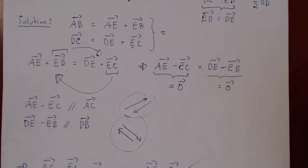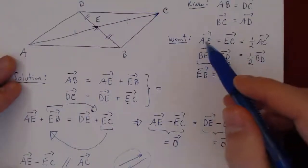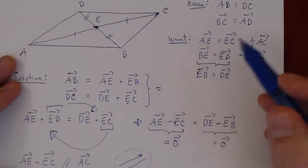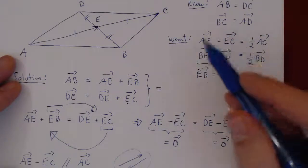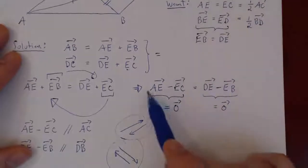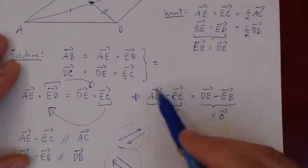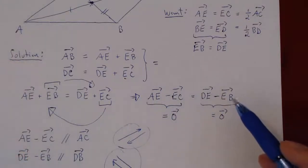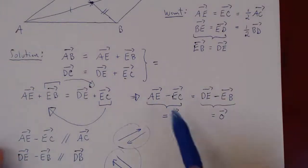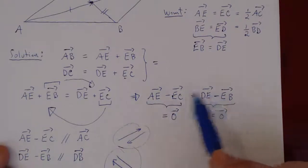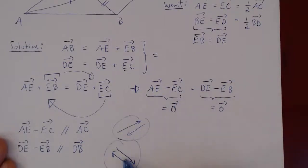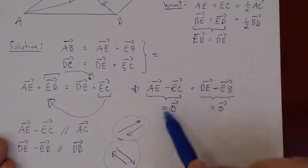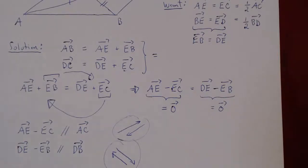The only tricky part was that the vector AE minus EC lies on diagonal AC, and DE minus EB lies on diagonal DB, so both had to have different directions and could not be equal — unless both were the zero vector. This was a subtle argument, but you'll encounter problems like this on the problem sheet. You cannot prove AE equals EC independently of BE equaling ED; you must prove both equalities simultaneously within the same equation. When you reach a point where two vectors are equal but cannot have the same direction, conclude both must be the zero vector — you'll use this trick again.